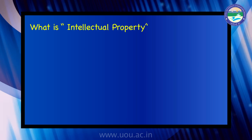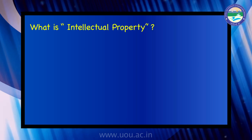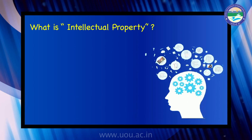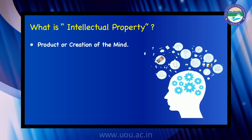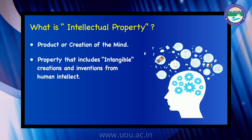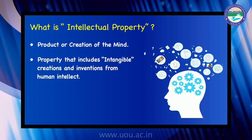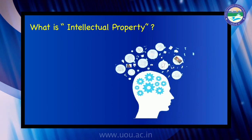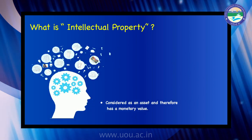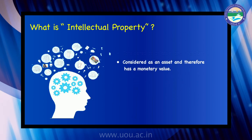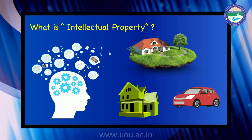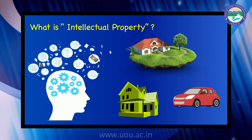Now let us understand what intellectual property actually is. Intellectual property is a property that arises from human intellect — it is the product or creation of the mind. It includes intangible creations and inventions from humans. It is just like any other property and shares several associated characteristics. It can be considered as an asset with a monetary value, just like land, your car, or your house.